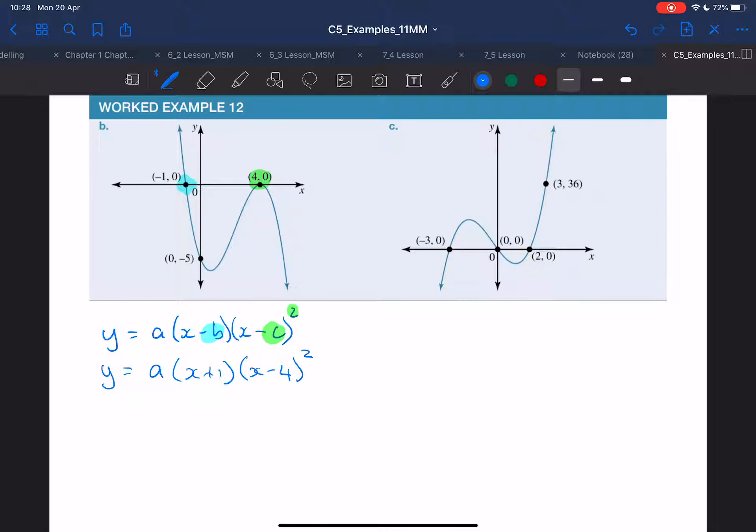So a equals x plus 1, and then x minus 4 squared. So remember, if this is minus c, x minus 4 means the turning point is at 4. I still have to find a though, and to find a, I'm going to use another point. The only other point that I haven't used is this point here. So if I substitute again x and y in there, it should give me the right answer.